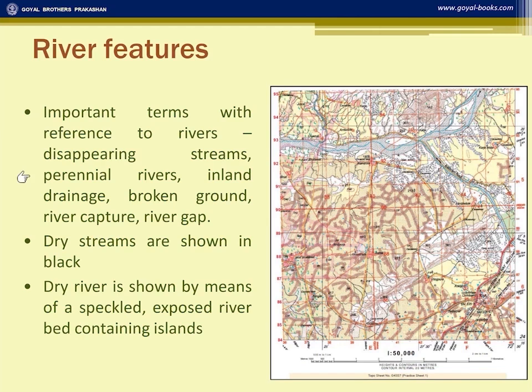Perennial rivers are those where water is present throughout the year. However, if you see a thin water channel in the river, the term used is 'thin water channel.' You cannot call the river perennial because the water may not be there throughout the year.